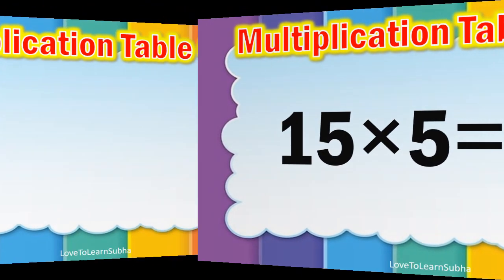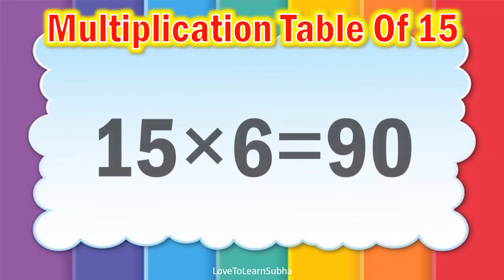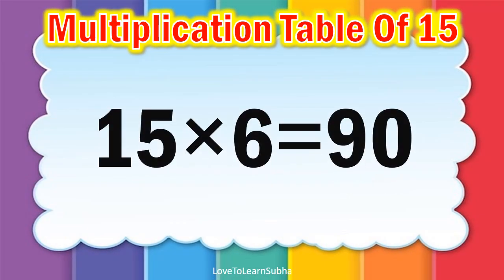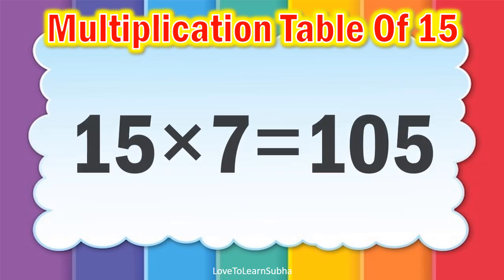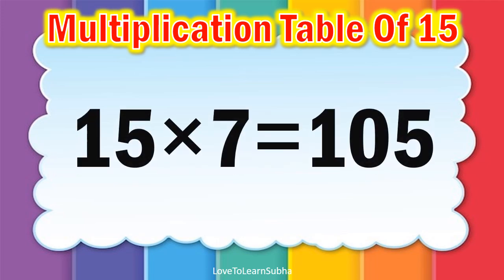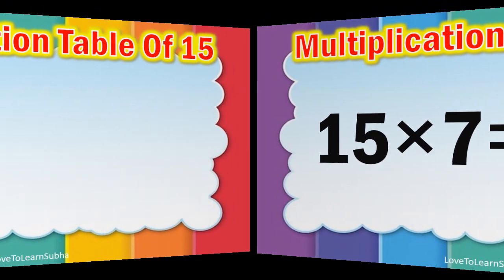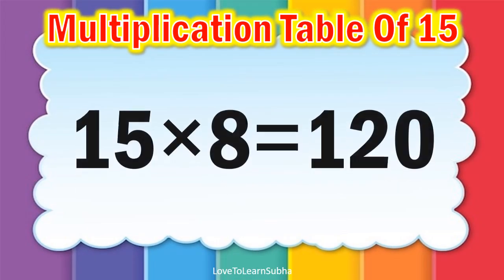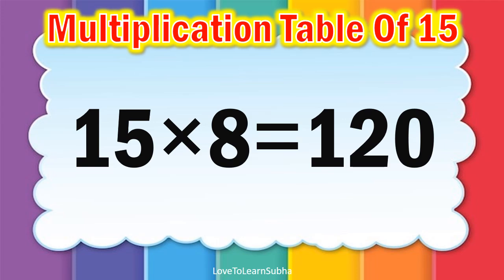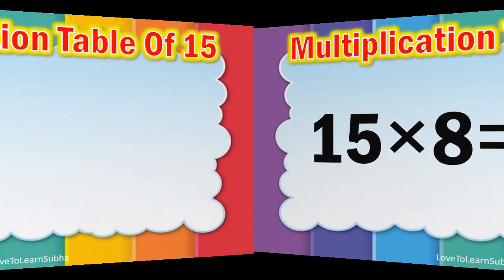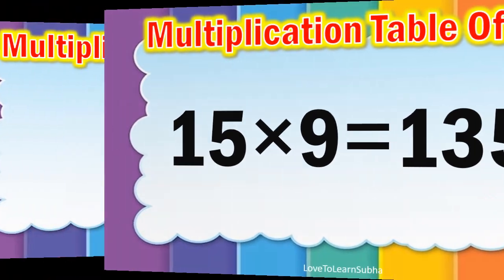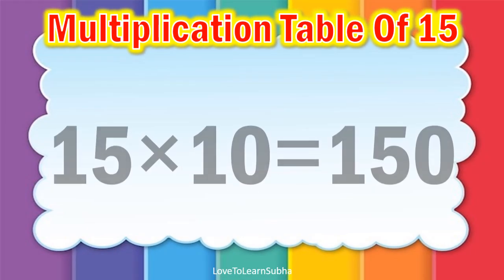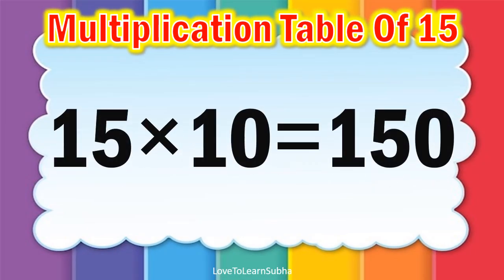15 sixes are 90, 15 sevens are 105, 15 eights are 120, 15 nines are 135, 15 tens are 150.